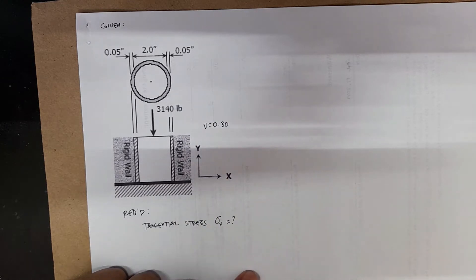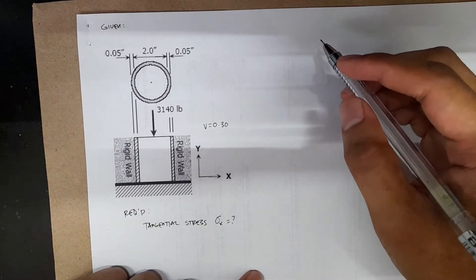We have the Poisson's ratio for the material, which is 0.3. We are asked to find the tangential stress, or the stress along the X direction. This is tangential stress; the other is longitudinal stress.